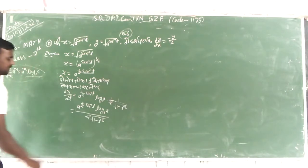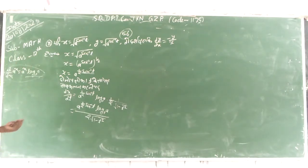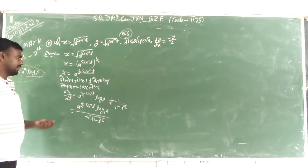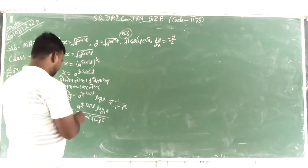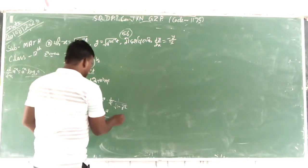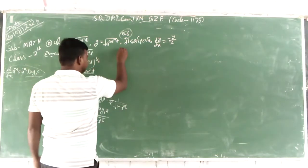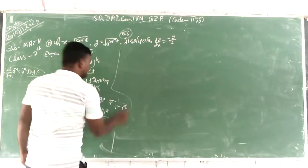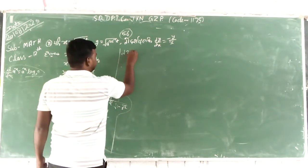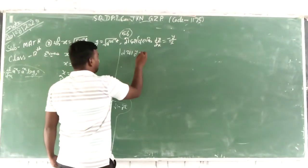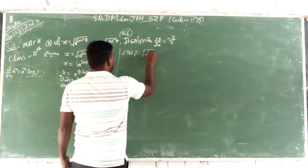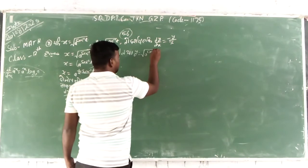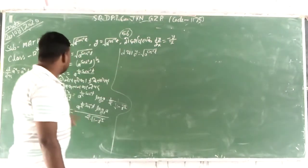Now, this is log A times 1 minus t square — this is d-exponent dp. What is y? This is y — root k to the power cos inverse t.